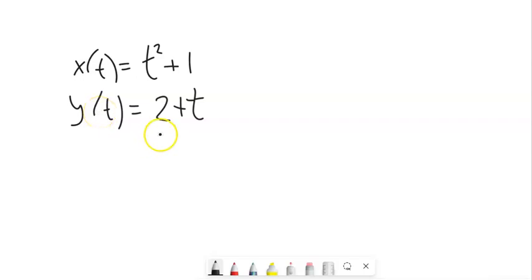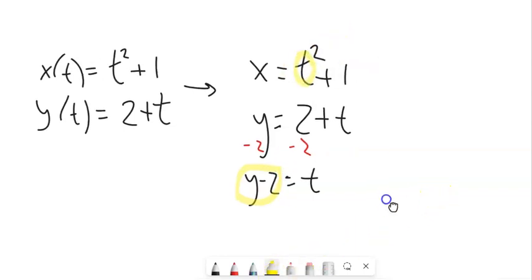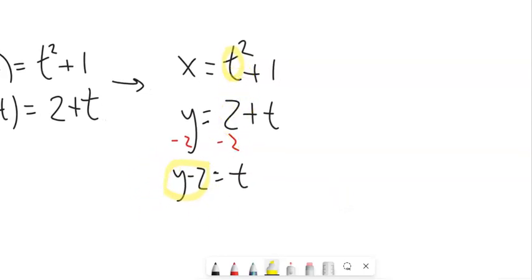There's a couple techniques, but one of them is to do substitution. This has a t squared in it. I'm going to solve this for t and plug it into the other one. I'm going to stop writing this as x as a function of t. I'm just going to say x equals that. It's just a different notation. And y equals that. So let's see, solve for t here. Subtract 2 from both sides. So t is y minus 2. They're equivalent to each other. So how about I plug that into that spot?